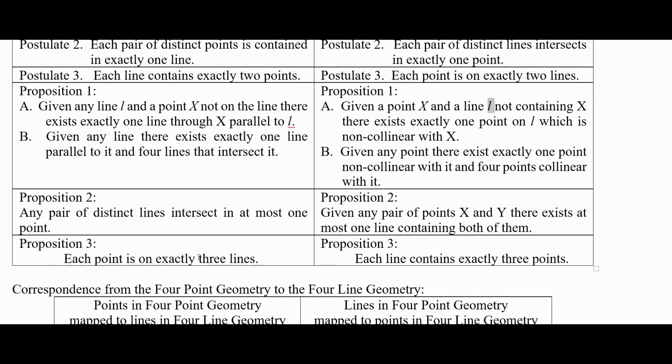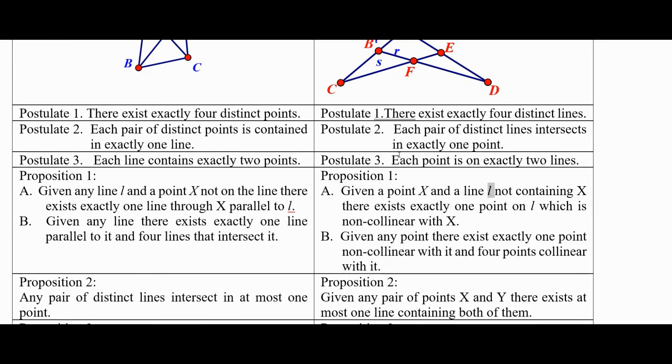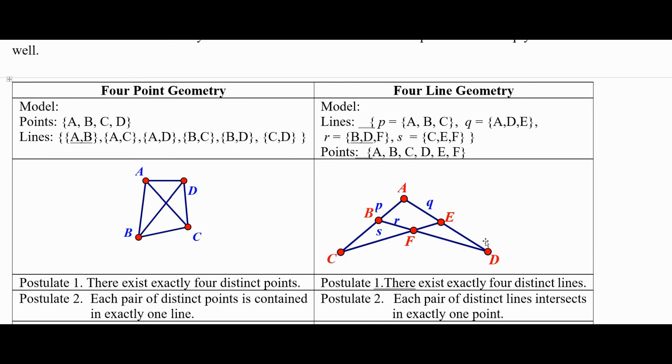Each point is on exactly three lines. See point A, there are three lines containing it. Over here, each line contains exactly three points. Pick a line, like this one. It contains three points, A, D, and E.